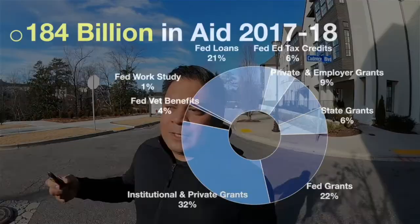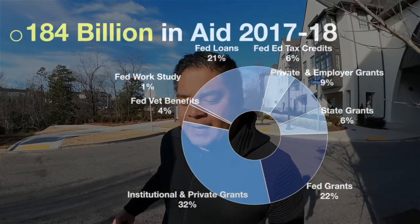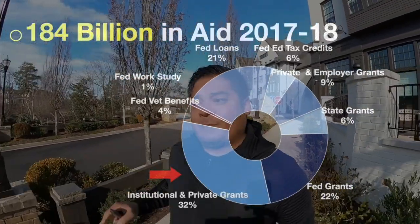According to the Department of Education, there's over $184 billion in aid. More than half the free money available doesn't come from the government — it comes from the colleges themselves. Emory University here in Atlanta has a $6 billion endowment; Harvard's endowment is over $40 billion. Even private schools you've never heard of sit on endowments in the hundreds of millions of dollars. That's the money you want to go after.